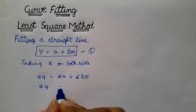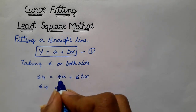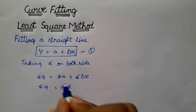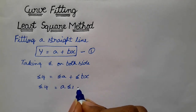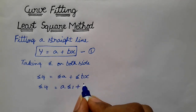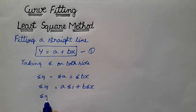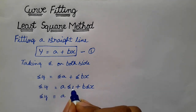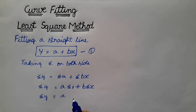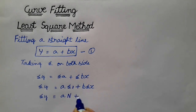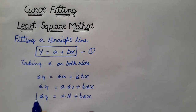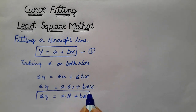Then sigma y is equal to — since sigma of a constant a equals N times a, and sigma bx equals b sigma x — the first normal equation becomes: sigma y is equal to N·a plus b·sigma x. This is equation number 2.